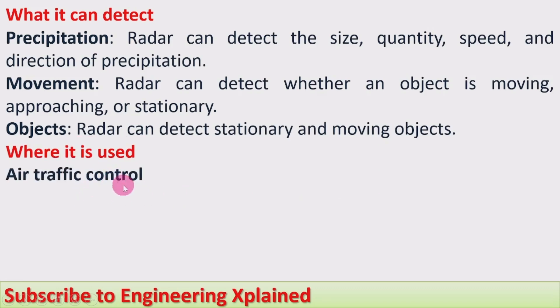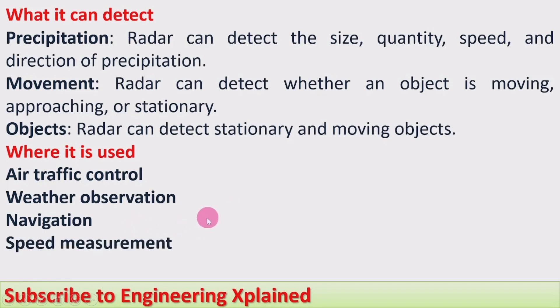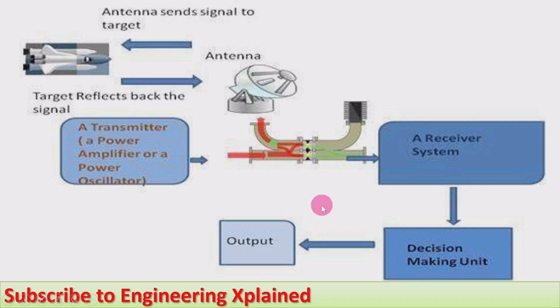Where it is used: Air traffic control of flying airplanes as well as defense. Weather observation - it can be used for weather observation and reporting. Navigation - it is used for the navigation of ships and aircraft. Speed measurement - it is used for measurement of the speed of any object. It can be used for space surveillance and planetary observation - for other planetary and space applications also.